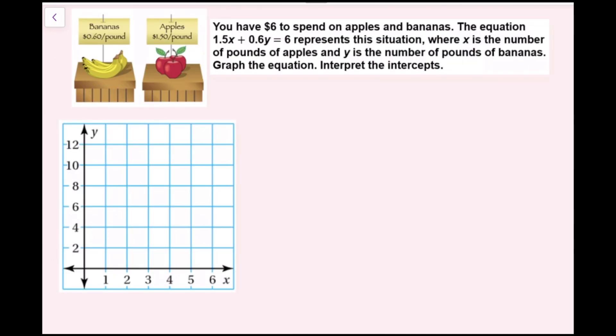For example 3, you have $6 to spend on apples and bananas. The equation 1.5x plus 0.6y equals 6 represents this situation, where x is the number of pounds of apples and y is the number of pounds of bananas. Graph the equation and interpret the intercepts. We just went over two different ways to graph an equation in standard form: find the intercepts or convert to slope-intercept form. For this example, I'm going to find the intercepts.